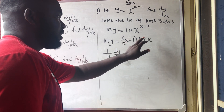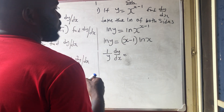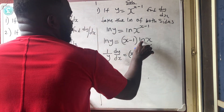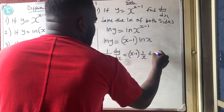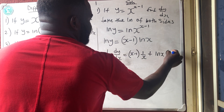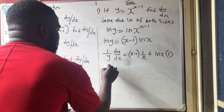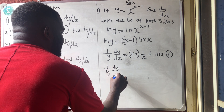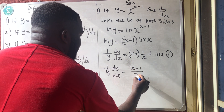The shortcut for product rule: leave the first, differentiate the second, plus leave the second, differentiate the first. So leave (x−1), differentiate ln x to get 1/x, plus leave ln x, differentiate (x−1) to get 1. So 1/y · dy/dx equals x−1 over x plus ln x.